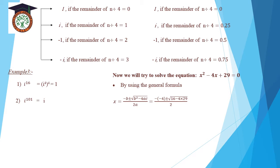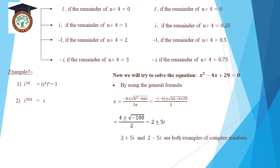With a equals 1, b equals negative 4, c equals 29: x equals negative (negative 4) plus or minus square root of (negative 4)² minus 4 times 1 times 29, over 2. This gives 4 plus or minus square root of 16 minus 116, over 2, which equals 4 plus or minus square root of negative 100, over 2. Square root of negative 100 equals 10i. So x equals 4 plus or minus 10i, over 2, which simplifies to 2 plus or minus 5i.